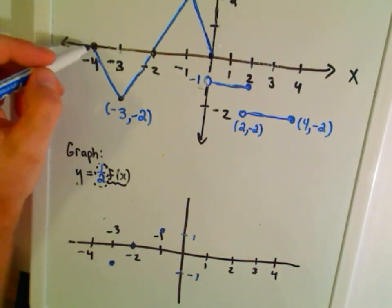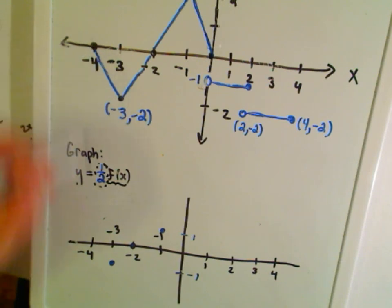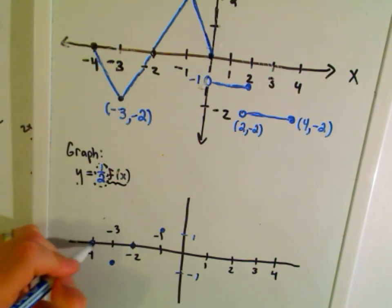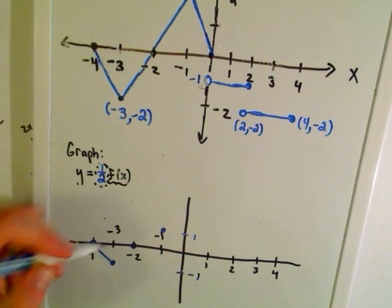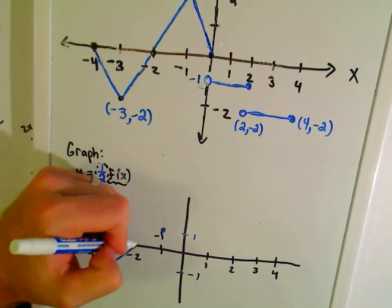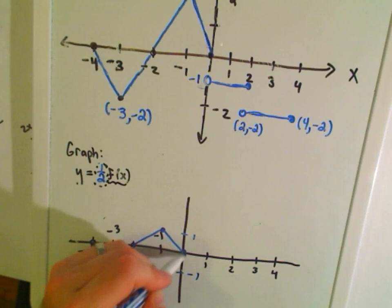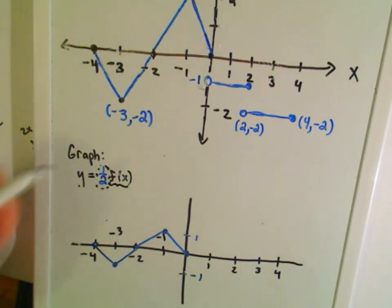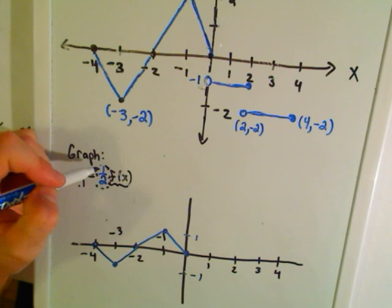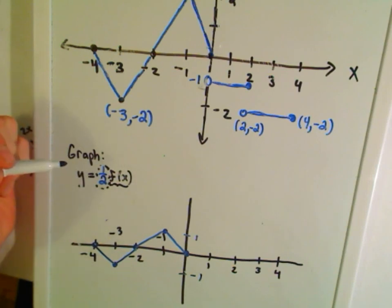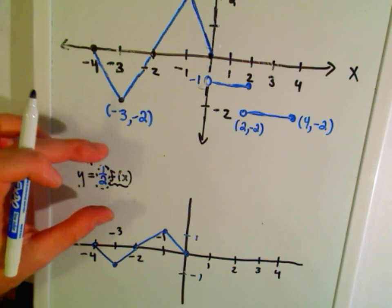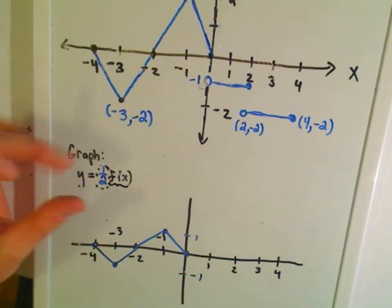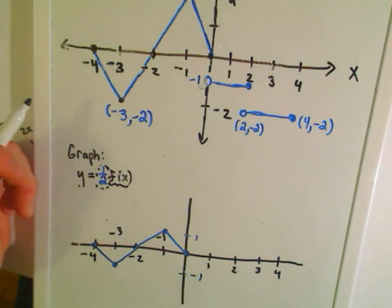The y-coordinate at x = -4 is zero — multiplying by one-half keeps it at zero. This one looks more squished. Multiplying the function by a fraction between zero and one compresses the graph vertically.